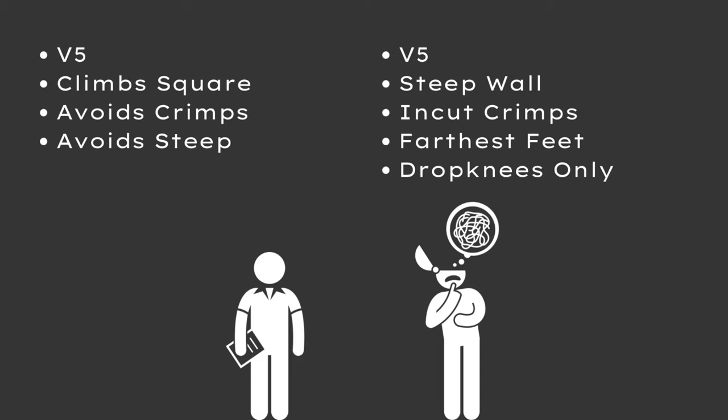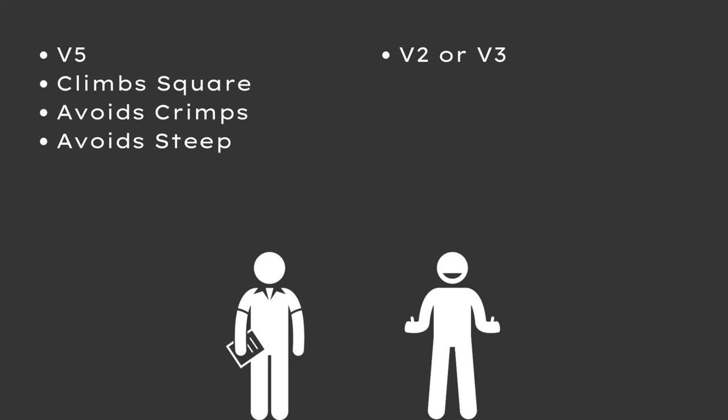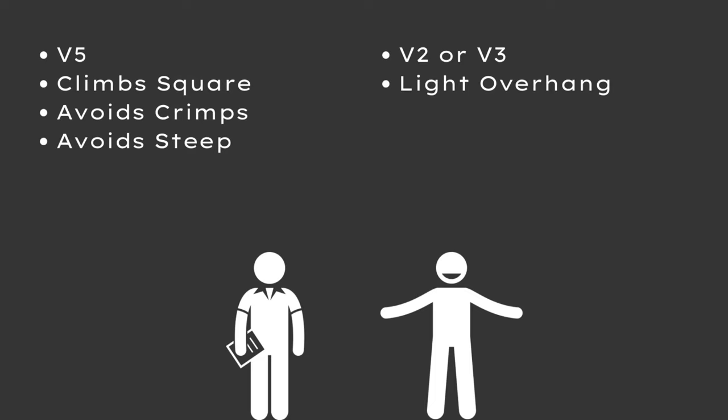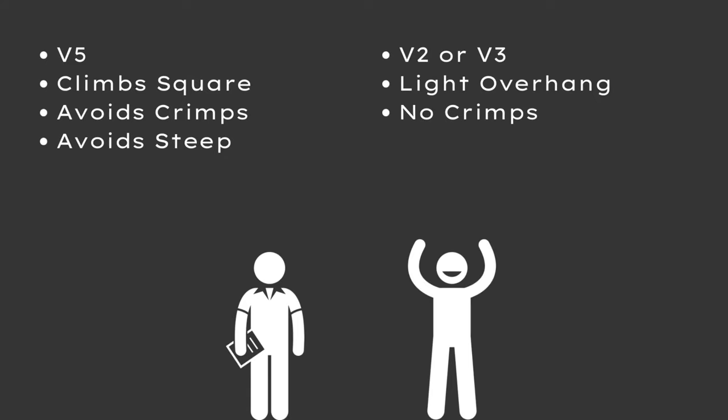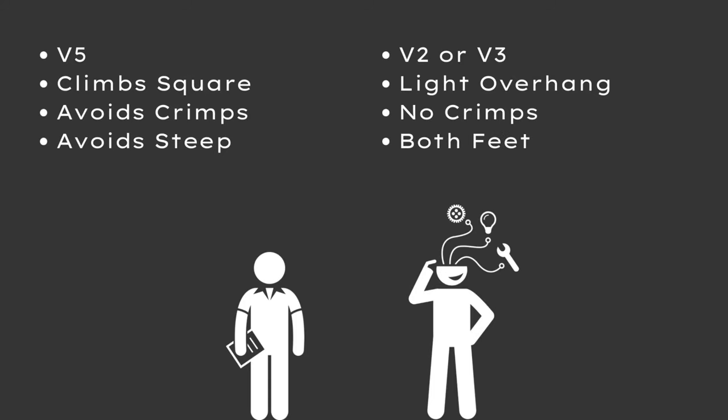Instead, we want to limit the difficulties while amplifying the desirable ones. What I would do is make the terrain easier — say V3 or even V2 — stay on a wall angle they really enjoy, lightly overhanging. I'd choose problems without obvious in-cut crimps so they can climb slopers or whatever they want, and give two constraints: both feet must be on the wall for every move, and try to keep arms as straight as possible.